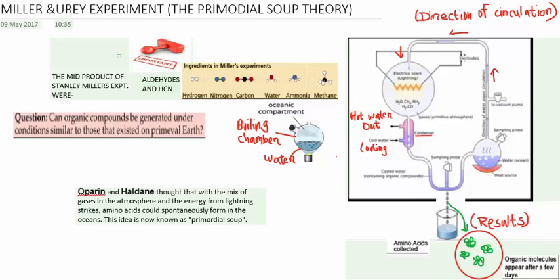Miller and Urey sought to test the chemical origin of life. The question is: can organic compounds be generated under conditions similar to those that existed on primeval earth? The primitive earth is supposed to be the reducing type.